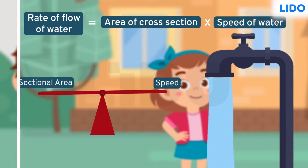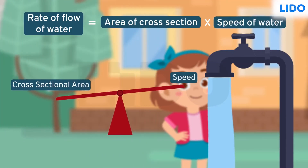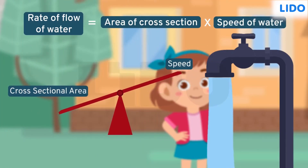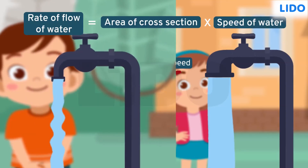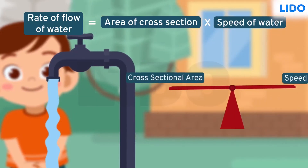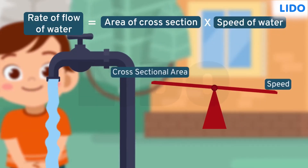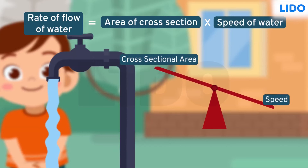In Irene's case, the area of cross-section was bigger but the speed was less. On the other hand, in Sam's case, the area of cross-section was smaller but the speed was higher. So the rate of flow gets balanced.